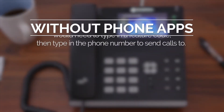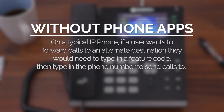On a typical IP phone, if a user wants to forward calls to an alternate destination, they would need to type in a feature code, then type in the phone number to send the calls to. There are literally dozens of feature codes which control call forward settings, so it can be hard to remember them all.